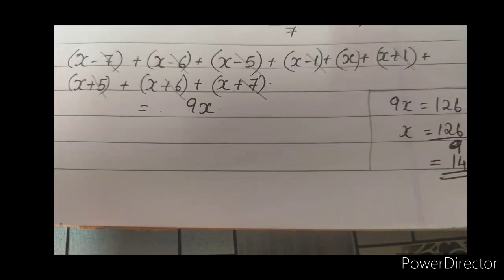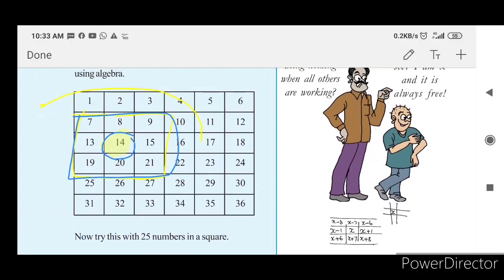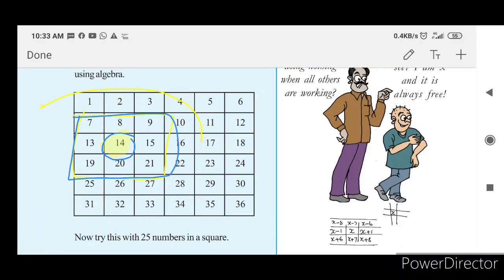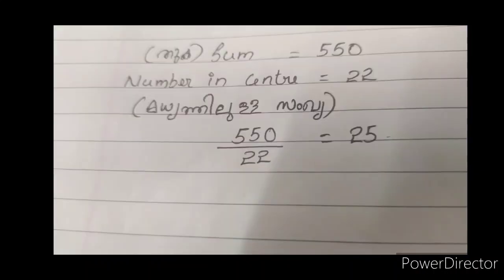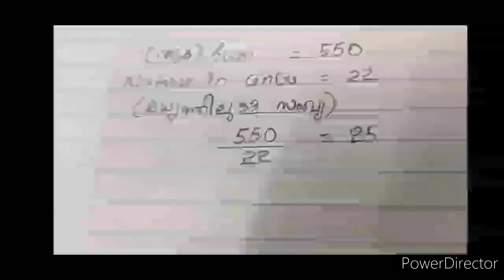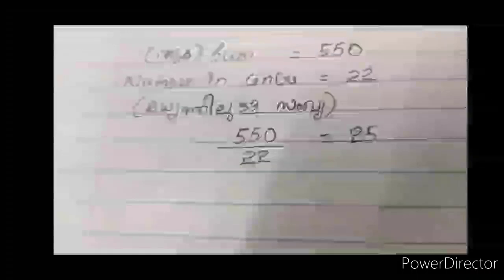If you want to extend this further with 25 numbers in a 5×5 square, you will need to select 25 numbers. If you want to select that box, you will need to select all 25 numbers. For this box, the center will be some value, and the total will equal 25 times that center. That is 25x.